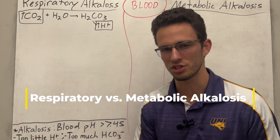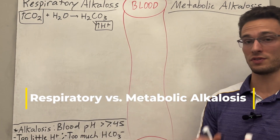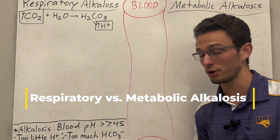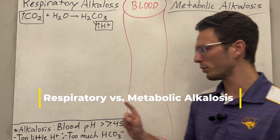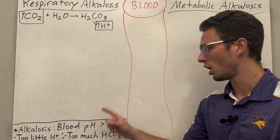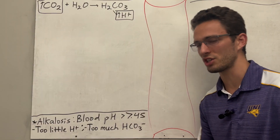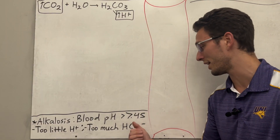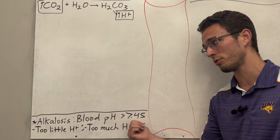So remember, with alkalosis — if you haven't watched the previous videos, I'd recommend it first. But remember, with alkalosis, our blood pH has gotten too high. It's above 7.45.